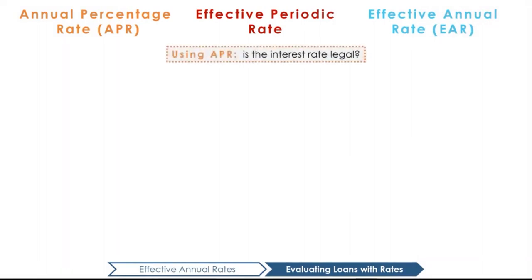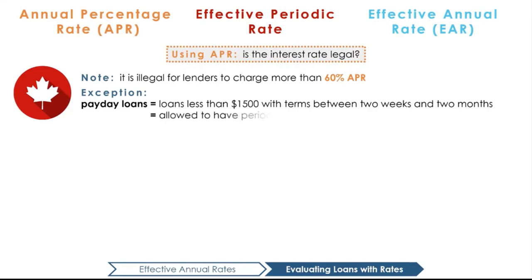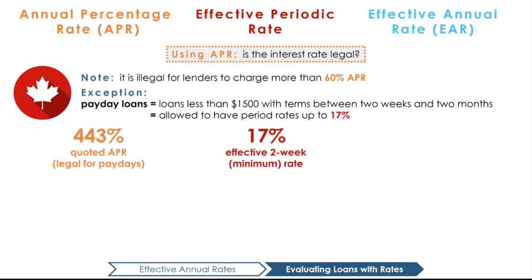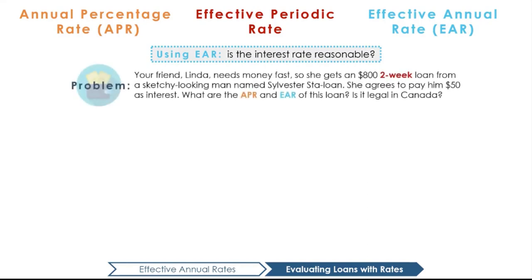When might we use the EAR over the APR? Each rate can be useful to help us evaluate whether an interest rate is reasonable or even legal. For example, in Canada, lenders can't charge more than 60% APR. One exception is payday loans, which are loans less than $1,500 with terms between two weeks and two months. These loans carry period rates of up to 17%. For a two-week loan, this would make the maximum APR 443%, or 17% times 26, the number of biweekly periods in a year. Suppose your friend Linda needs money fast, so she gets an $800 two-week loan and agrees to pay $50 as interest. Try pausing the video to figure out first the APR and then the EAR of this investment, and see if you can decide whether or not this loan would be legal in Canada.